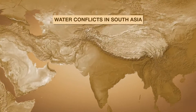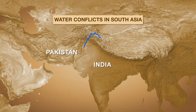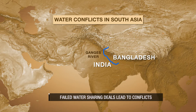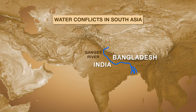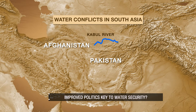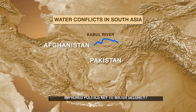What are the sources of conflict in South Asia? Pakistan recently approached the World Bank after India threatened to review the 56-year-old Indus Waters Treaty. The sharing of Ganges waters has been a source of conflict between India and Pakistan, especially after India built a dam that diverts water. With the Kabul River flowing between Afghanistan and Pakistan, experts are calling for a water-sharing treaty between the two countries.